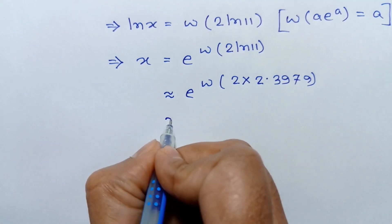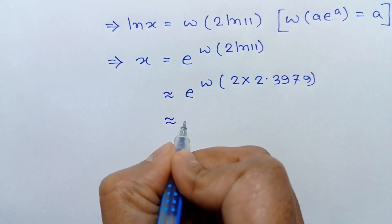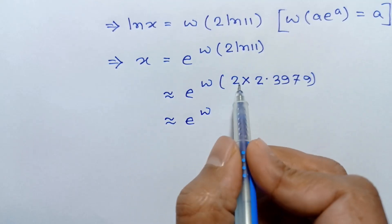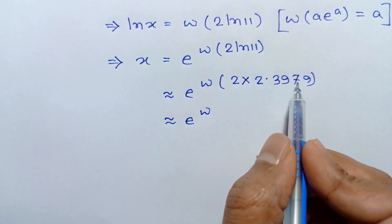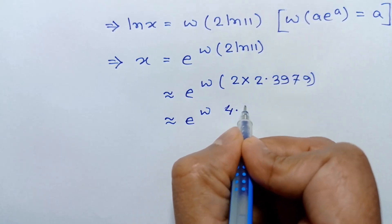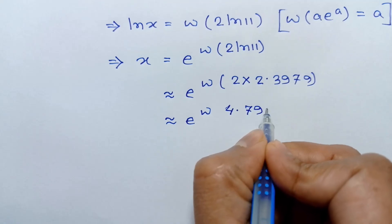The approximate value of x is e to the power W of 4.7958.